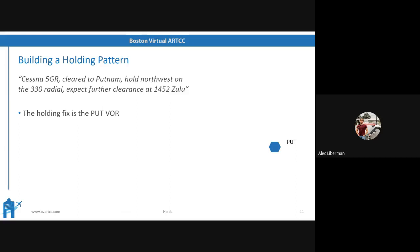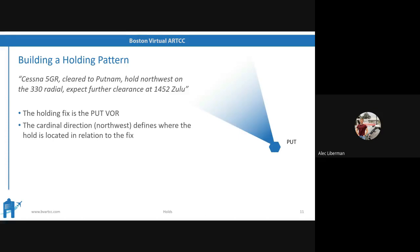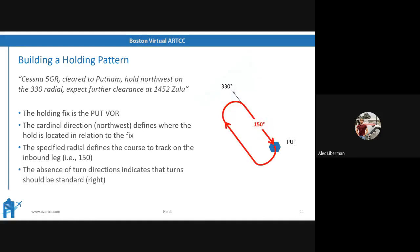We know that the nav aid or holding fix is the Putnam VOR. The cardinal direction — northwest — defines where the hold is in relation to that fix. The specified radial defines the course to track on the inbound leg. So if you're on the 330 radial to the northwest, your inbound leg, since it has to be towards Putnam, is a 150 track. And because air traffic control didn't specify anything about turns, we can assume it's standard — right turns.